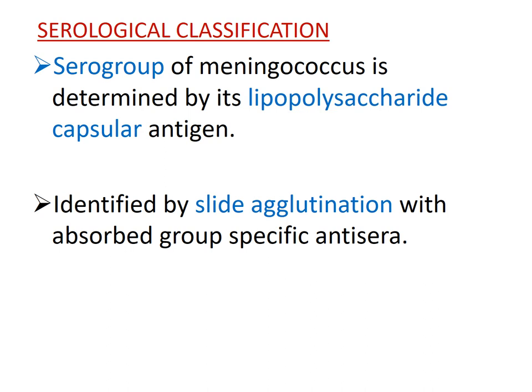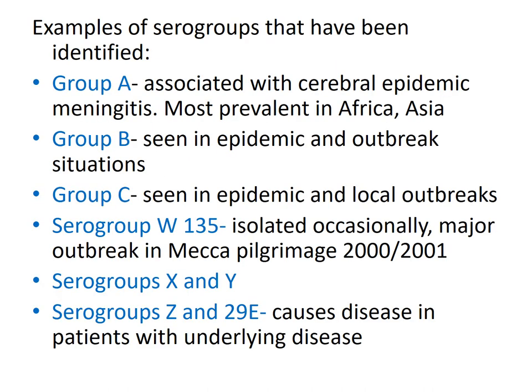The serogroup of meningococcus is determined by its lipopolysaccharide capsular antigen, and these serogroups can be identified by slide agglutination with absorbed group-specific antisera. Examples of serogroups include A, B, C, and continue through the alphabet to Z. These serogroups vary in geographical distribution — certain serogroups are more prevalent in certain continents. Some are associated with comorbidities; for example, Z and E cause disease in patients with underlying conditions.